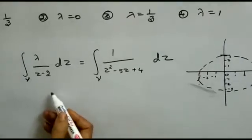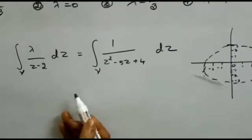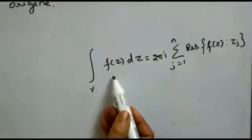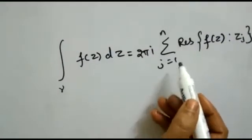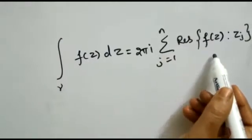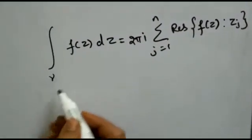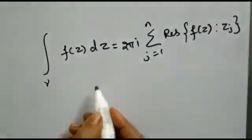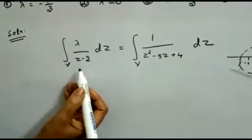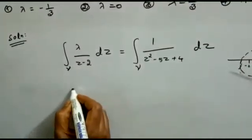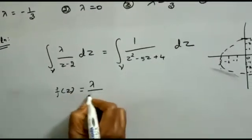We calculate the integral value over the curve gamma using the residue theorem: 2πi times the summation over j from 1 to n of the residue of f(z) at z_j, where z_j are the singular points of f(z) inside the curve.